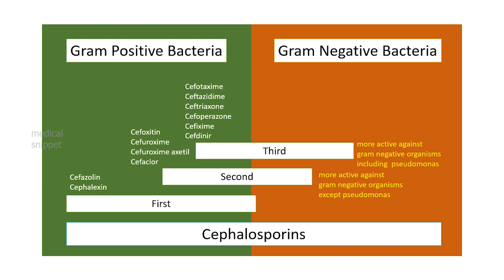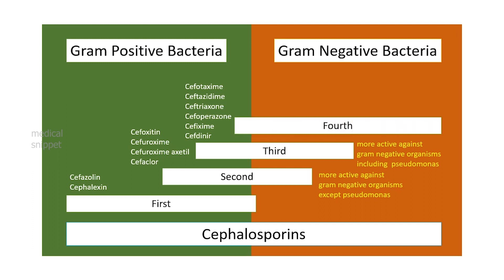Third-generation cephalosporins are also more active against gram-negative organisms; in addition, some are active against Pseudomonas. It should be noted that as the generation increases, gram-positive coverage decreases and gram-negative coverage increases. Fourth-generation drugs are beta-lactamase resistant and are potent anti-pseudomonal agents.